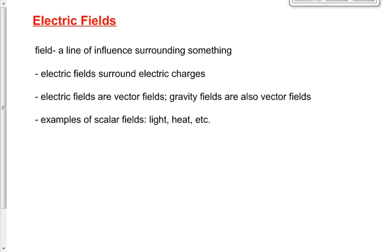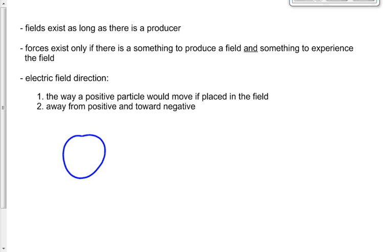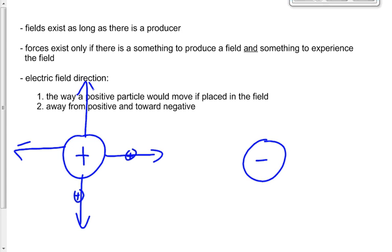Yesterday we talked about electric fields. We define any field as a region of influence that surrounds something. Specifically, the electric field is the region of influence that surrounds an electric charge. There are two kinds of charges — positive and negative — and they both influence other charges in different directions. Therefore they're vector fields, because there is a direction associated with that influence. We define the direction of the electric field as the way a tiny positive particle would move if placed in the field. The field always points away from a positive producer.